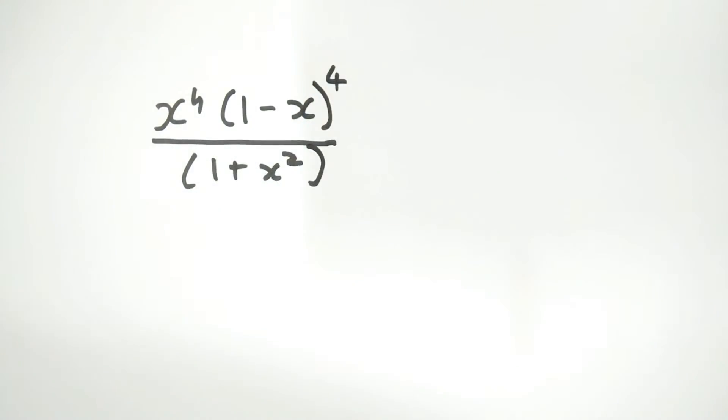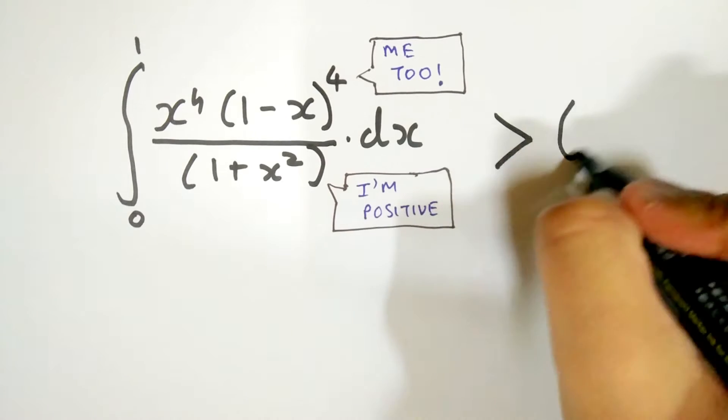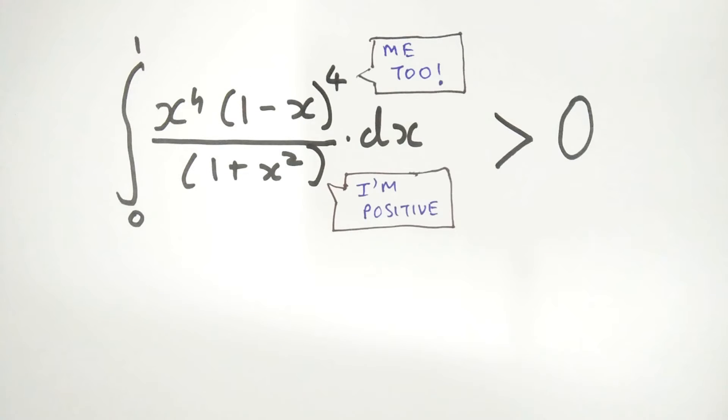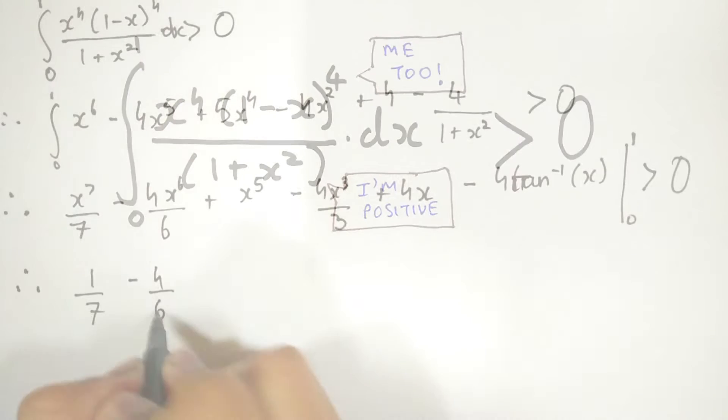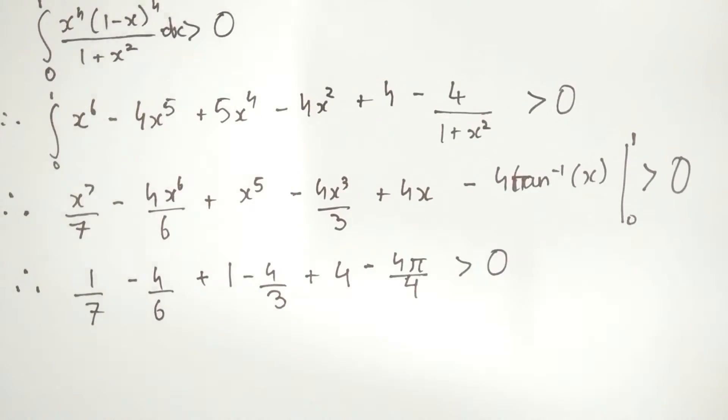The proof lies in the integration of this equation. The denominator is positive as it has a squared term. The numerator is also positive because it has the fourth power of x. This leads us to the conclusion that this whole thing is positive or greater than 0. Integrating it, we'll end up with this.